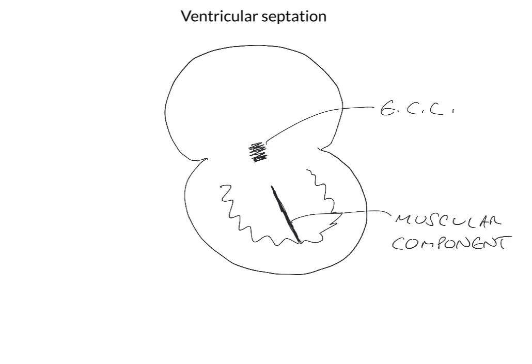And then a small portion known as the membranous portion grows down from the endocardial cushions. So this is the membranous component or the membranous portion. Between them, the muscular and the membranous portions form a complete interventricular septum, giving us the right and left ventricles.